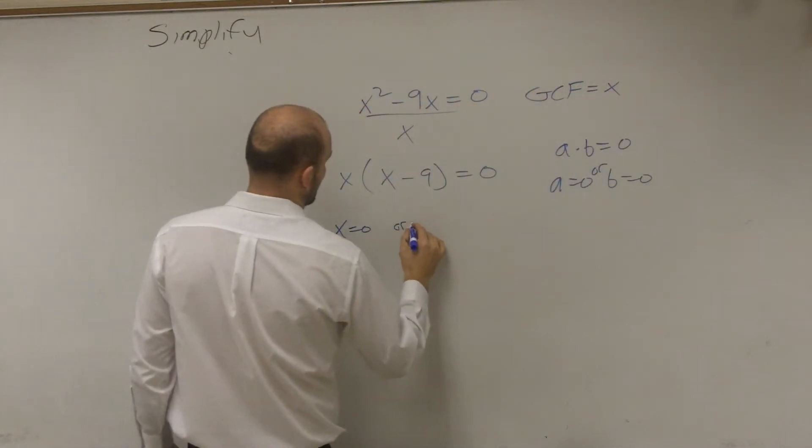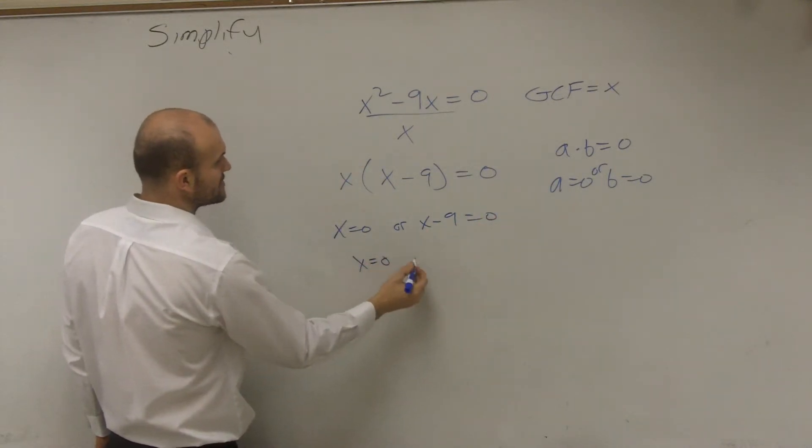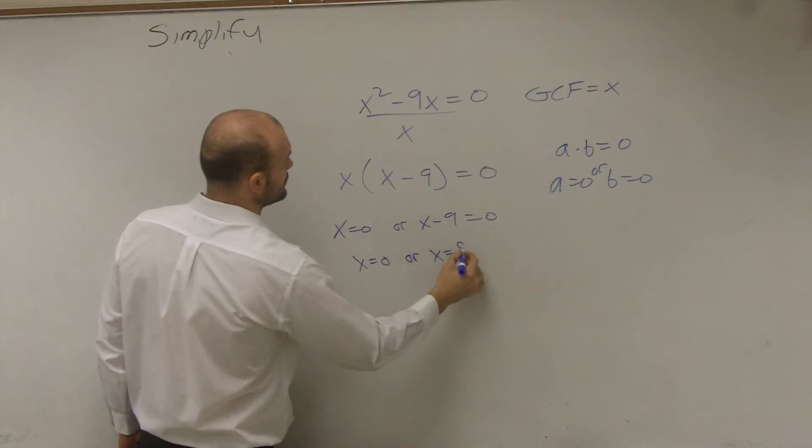x equals zero, or x minus 9 equals zero. Solving for x, x equals zero, or x equals positive 9.